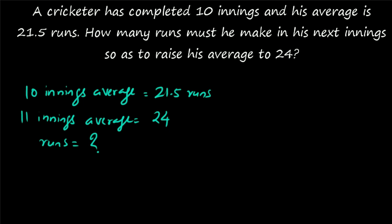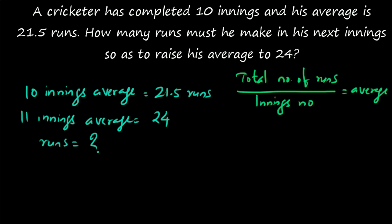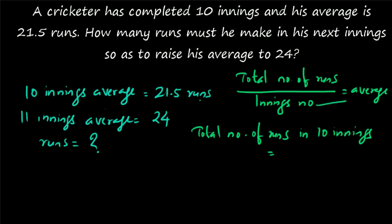Average is equal to total divided by number. Average will always equal total sum divided by total number of observations. Here, the average is total number of runs divided by total number of innings. It is given that the 10 innings average is 21.5 runs, so his total runs after 10 innings will be equal to 21.5 into 10, which gives you 215.